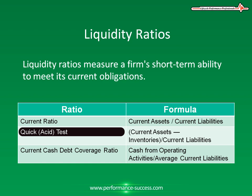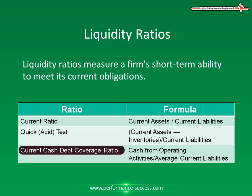The third liquidity ratio is the current cash debt coverage ratio. This equals cash from operating activities divided by average current liabilities. Comparing cash from operating activities to current liabilities, this ratio measures a company's ability to pay off its current liabilities with cash from operations.